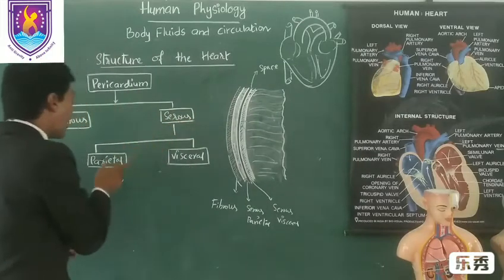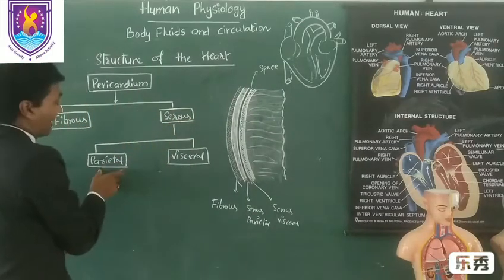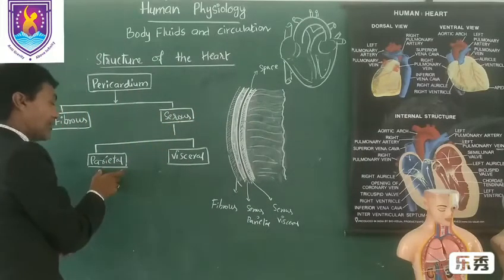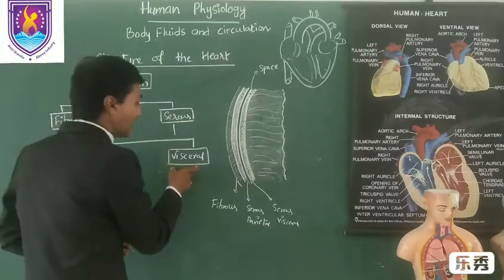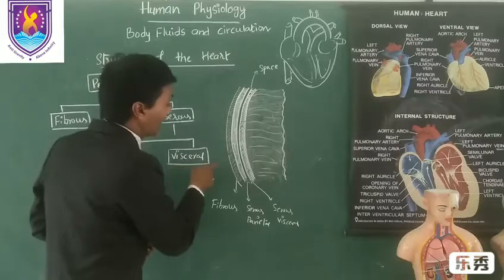Serous pericardium is a double-layered structure having two layers. The outer serous pericardium is known as parietal, and the inner is known as visceral.